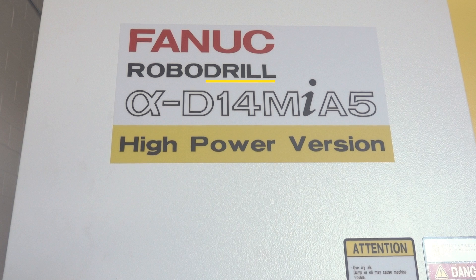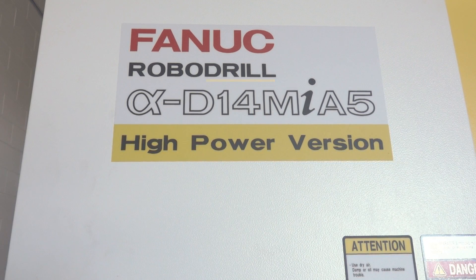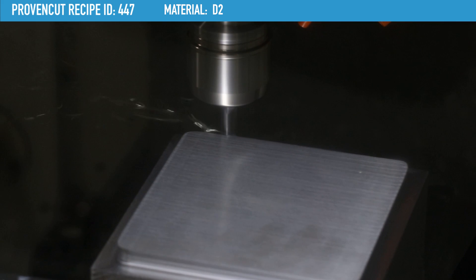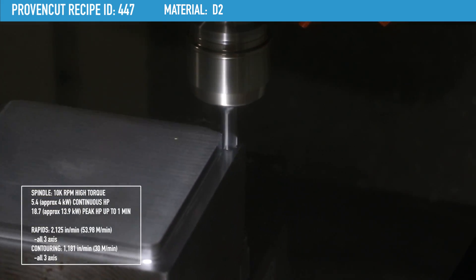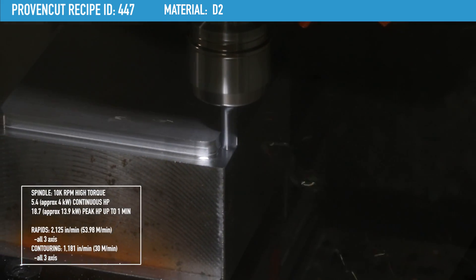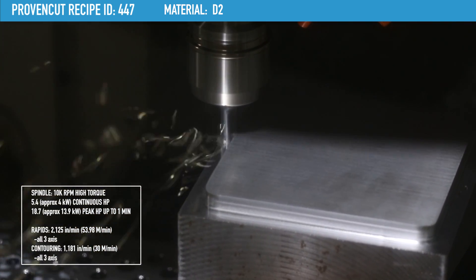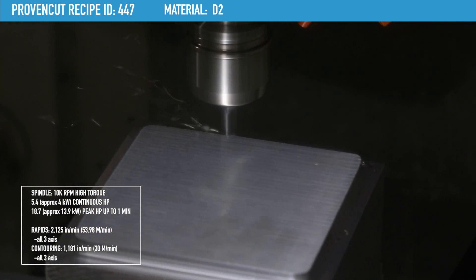It has a drill in its name but don't let that fool you. This is a full featured machining center capable of roughing steel and fine high detail surface contouring. This has the 10,000 rpm high torque spindle with 5.4 continuous horsepower and 18.7 peak horsepower for periods of up to one minute.